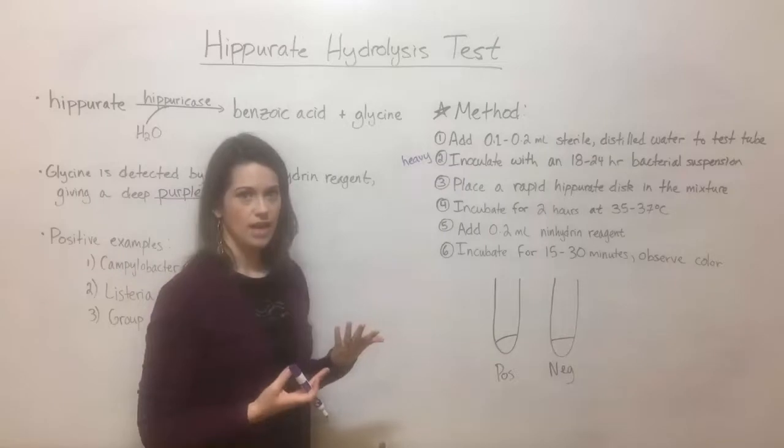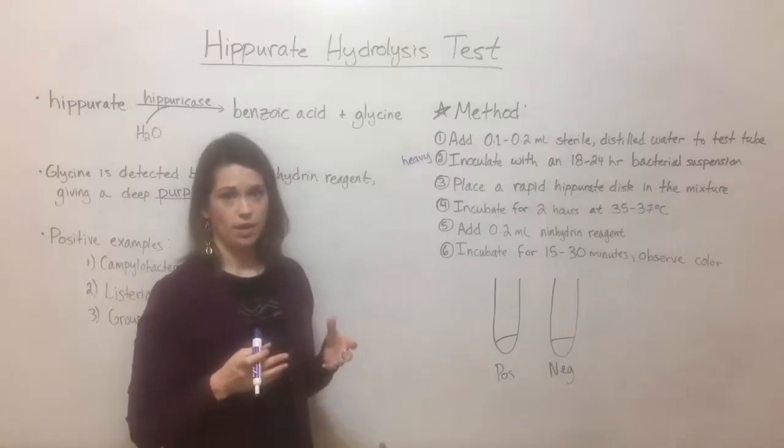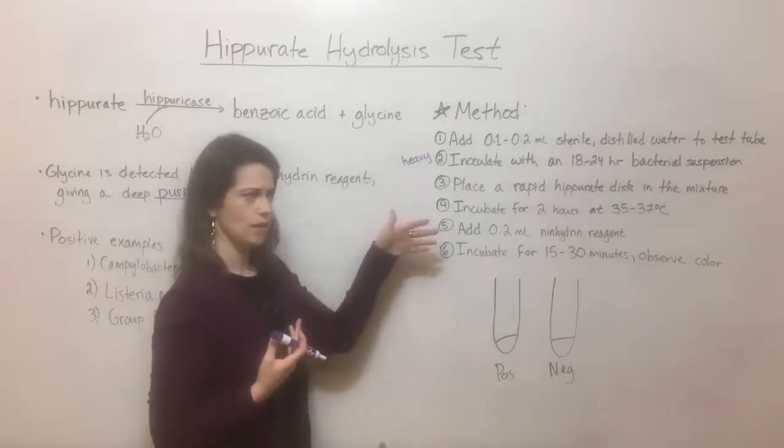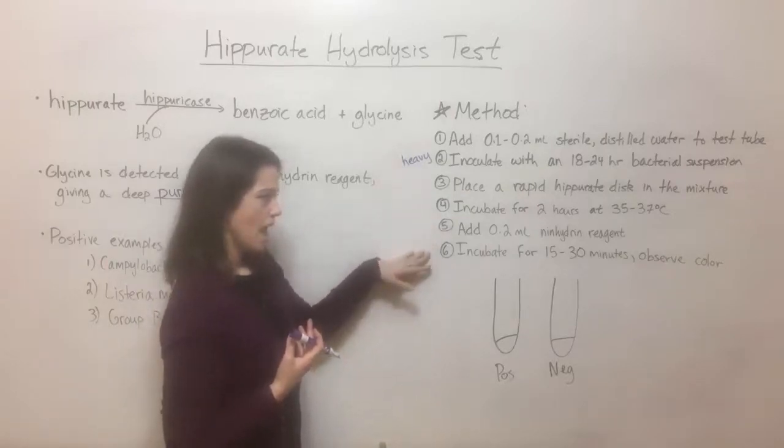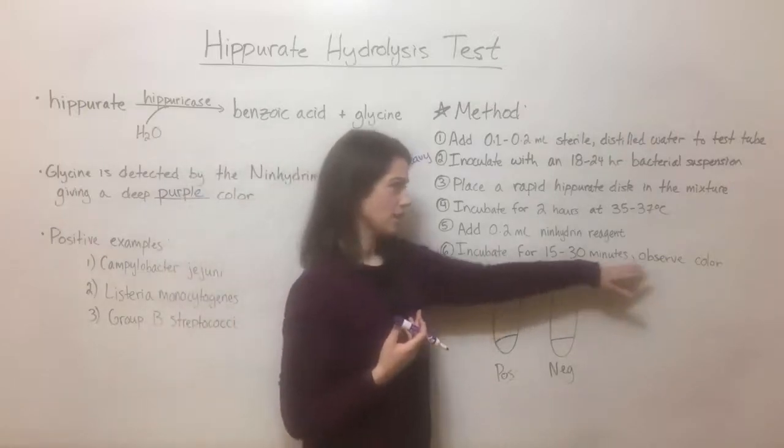And remember that the ninhydrin reagent, if glycine is present, it's going to react with glycine to result in this deep purple color. So you add 0.2 milliliters of the ninhydrin reagent, incubate for 15 to 30 minutes. Again, not a long period of time. Some other biochemical tests that are separating or identifying bacteria based on their metabolic capabilities can take a couple of days to carry out. This one, you can do the same day, same afternoon. So after that second incubation of just sort of half an hour or less, you observe the color.